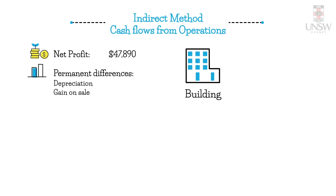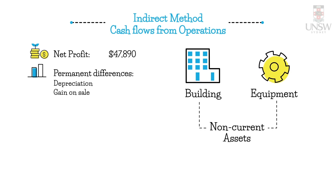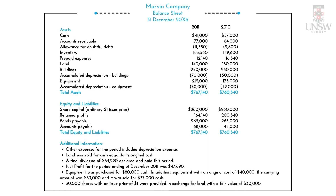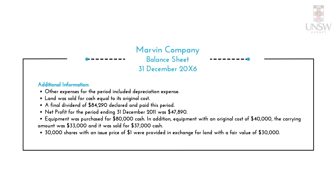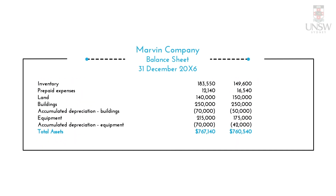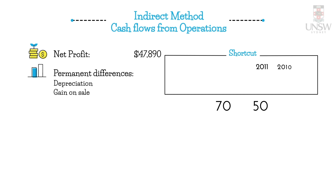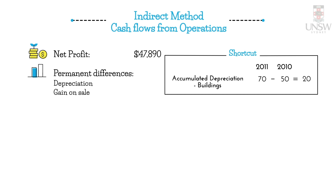This question has buildings and equipment as two non-current assets. Checking the additional information, equipment was sold during the period, so we can't use the shortcut for equipment. For buildings, there's no sale and no revaluation — we confirm this on the balance sheet where the opening and closing balances are both $250,000. So we can use the shortcut method: closing accumulated depreciation of $70,000 minus opening $50,000 gives us $20,000 of depreciation for buildings.